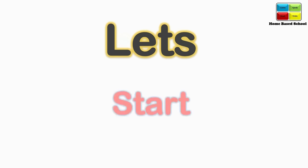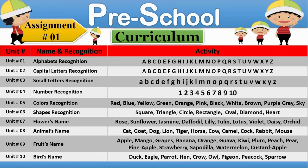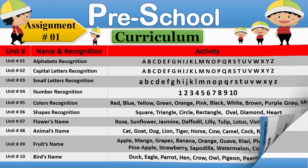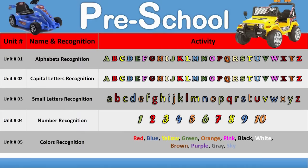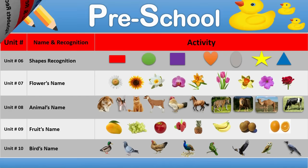Let's start. Pre-school curriculum, Assignment 1. In this assignment we have 10 units. Each unit has a separate video with activity. Now we show each unit one by one.